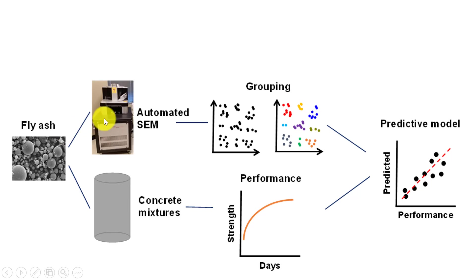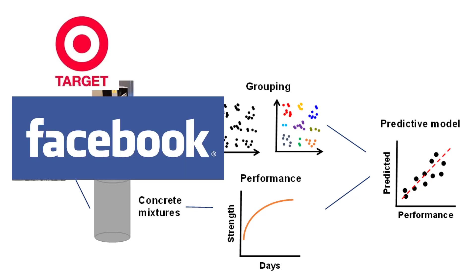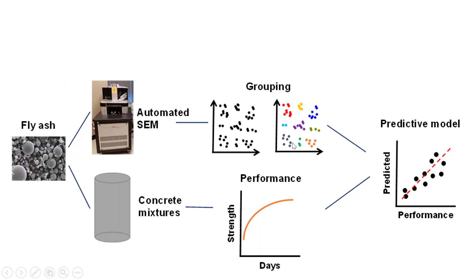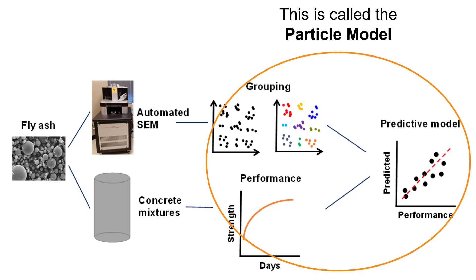We started out with fly ash and looked at it with a very fancy microscope called an automated SEM — I'll tell you more about that coming up. Then we grouped those data. We looked at more than 80,000 fly ash particles from 35 different fly ash sources. Then we used a machine learning algorithm — the same machine learning algorithms that Target, Facebook, and Amazon use to sell you stuff. We just tried to use it for good to better understand fly ash. We grouped them, made tons of concrete mixtures, measured their performance, and combined the machine learning with the performance to get a predictive model. Ladies and gentlemen, this whole thing is called the particle model.